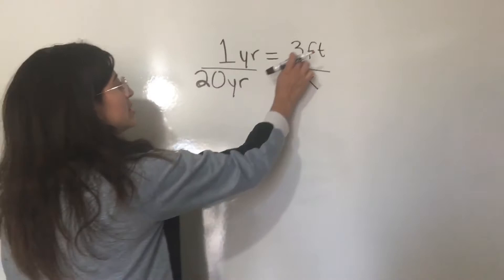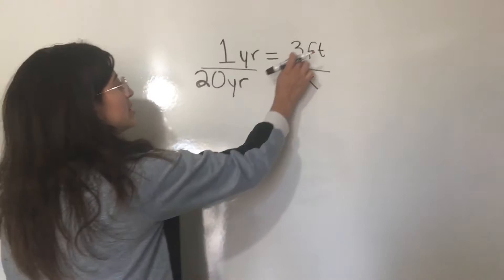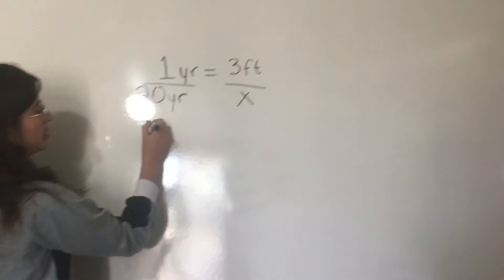20 yards times three. So, 20 times three is 60. So, then you have 60 feet.